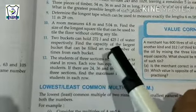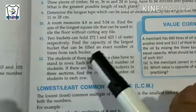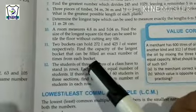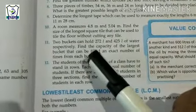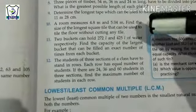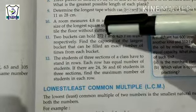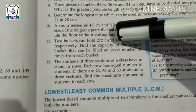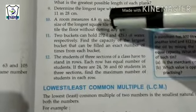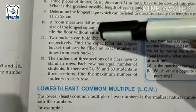Find the capacity of the largest bucket that can be filled an exact number of times from each bucket. We have to take one bucket. Two big buckets are there. We have to remove water from the bucket. When we remove water from the bucket, we don't need to save water. That can be filled an exact number of times.